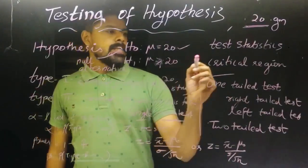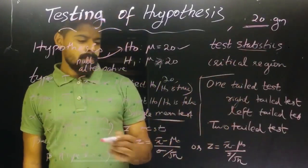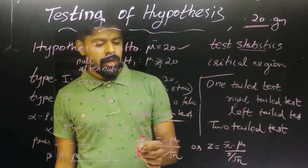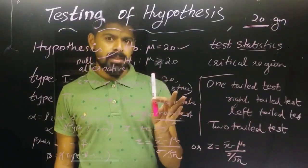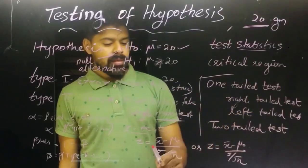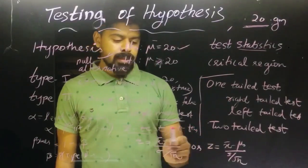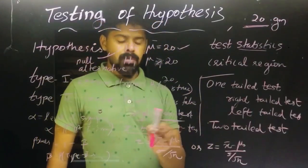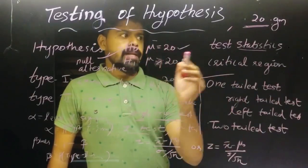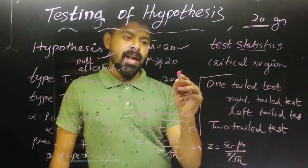What is the test statistic? The test statistic is used for testing parameters. For example, for a single mean test, we use Z equal to X-bar minus mu-naught divided by sigma by root n. For two mean tests, a different test statistic is used.